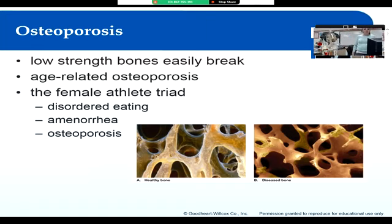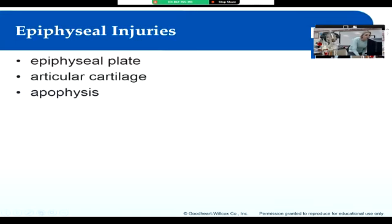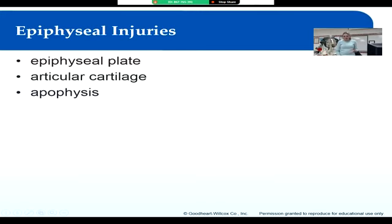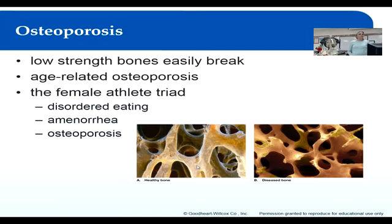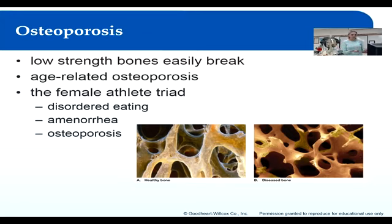Osteoporosis — you're probably familiar with it. Looking at the meaning: 'osteo' means bone, 'osis' means abnormal condition, and 'poros' means pore, an opening. So osteoporosis is a condition where your bones basically become overly porous. There are two different types.